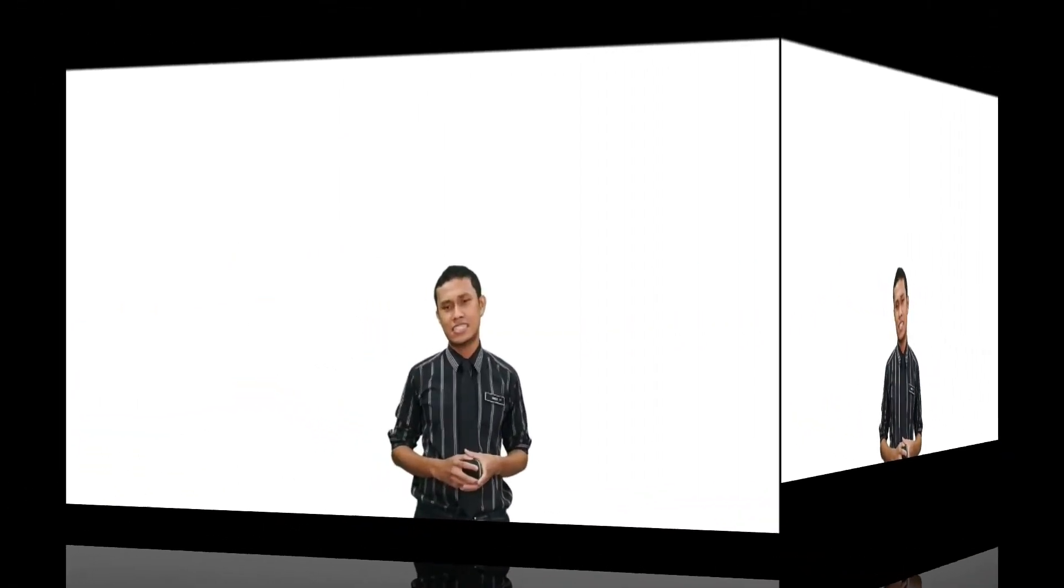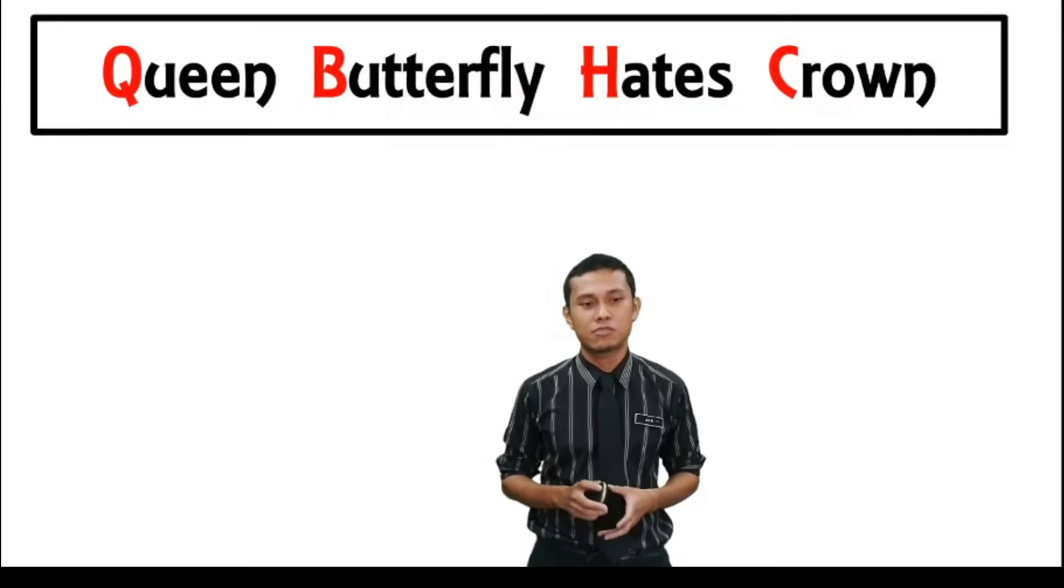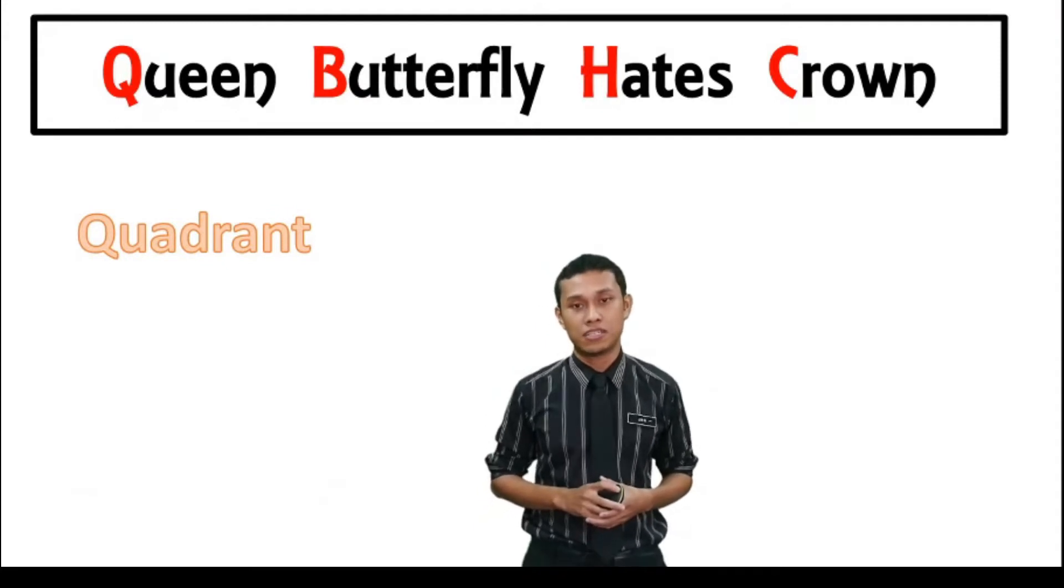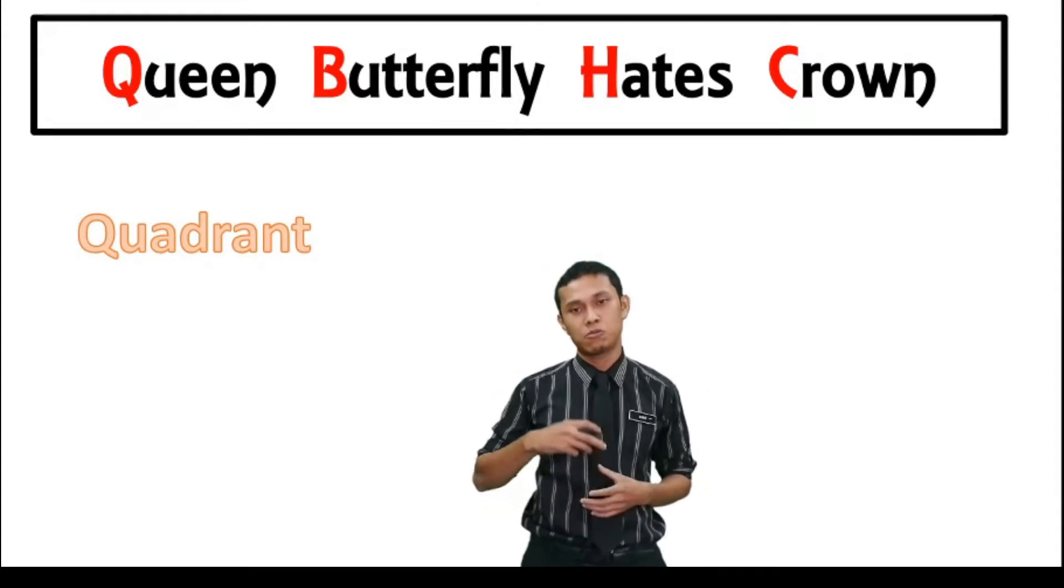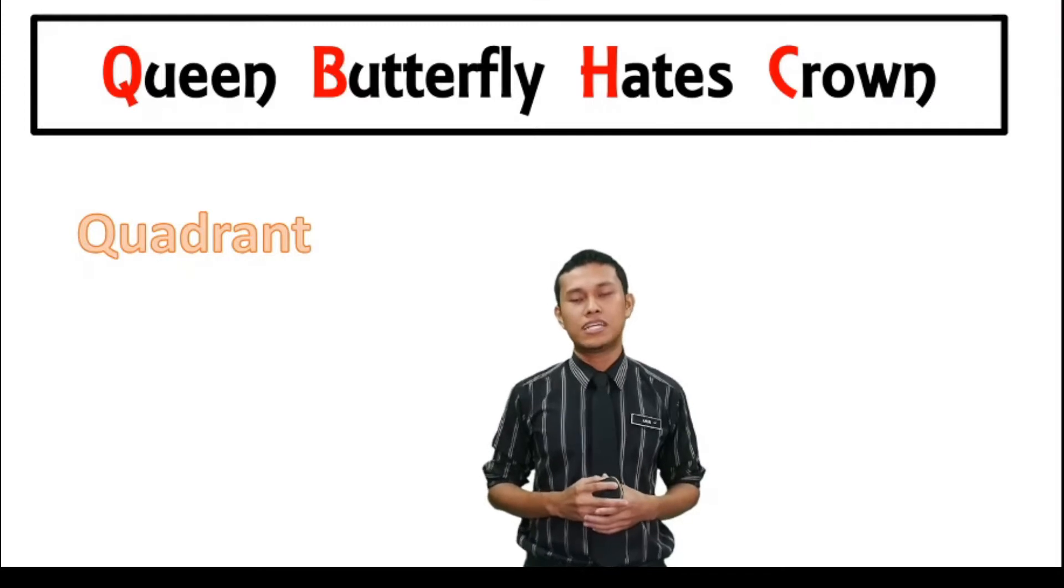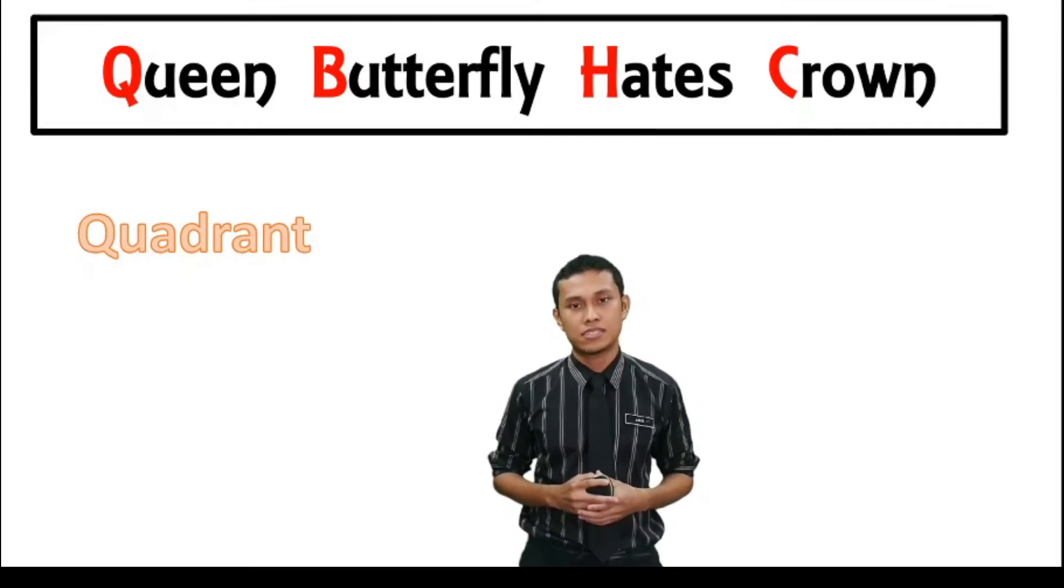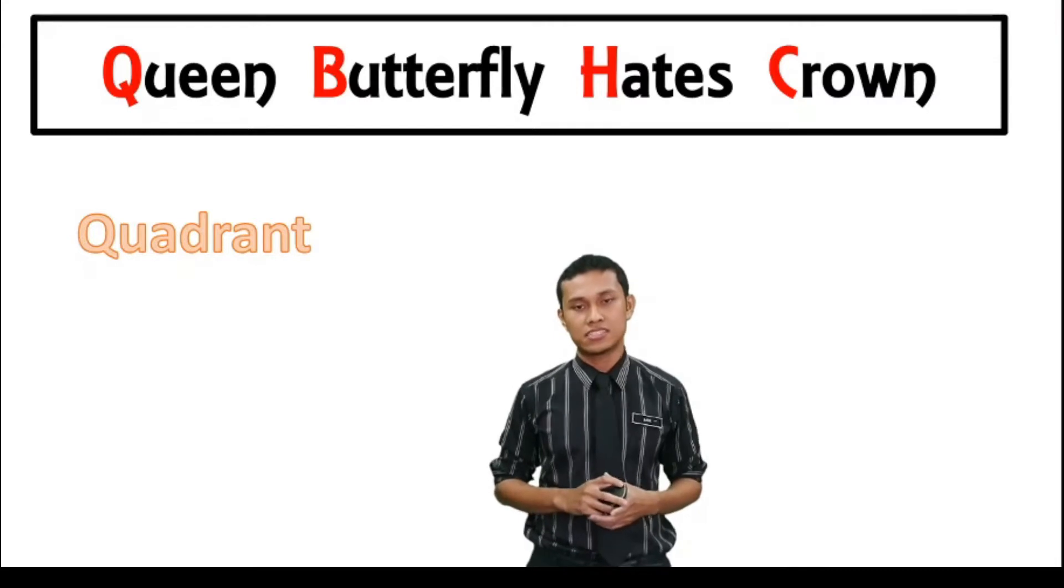How does the sentence Queen Butterfly Hates Crown can be related to finding the acute angle? So here is the general explanation of the sentence QBHC. Each letter represents the step that we will use to find the value for the acute angle. So we start with the first one, Q, which represents the quadrant. So in our step, the student will need to start the working with drawing the quadrant first and identify the location of the angles given.